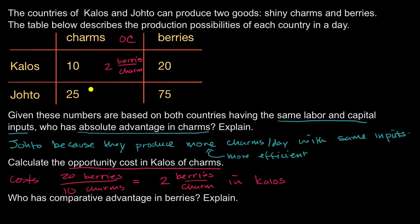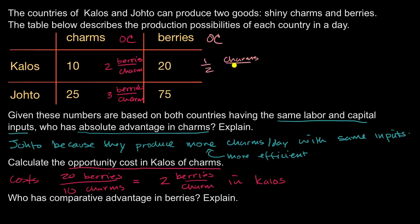If you're taking an AP exam, it's a good idea to fill out the full opportunity cost table. The opportunity cost of charms in Johto: to produce 25 charms they trade off 75 berries, so that's 75 divided by 25, which is three berries per charm. For the opportunity cost of berries, take the reciprocal of each: Kalos has one half charm per berry, and Johto has one third charm per berry — since producing 75 berries costs them 25 charms.